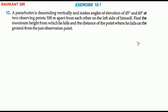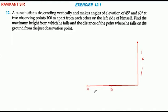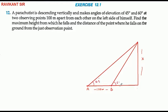We work on this point. We have a parachutist on this point. This is a point which is 100 meters apart from each other on the left side of themselves. Here the angle at one point is 45 degrees and at the other point is 60 degrees. We have to take points C and D.